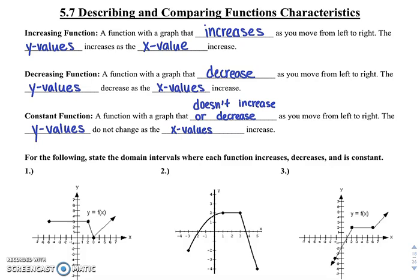We can describe and compare function characteristics just by looking at different intervals of a given function. We describe them in three ways: as either increasing, decreasing, or constant.